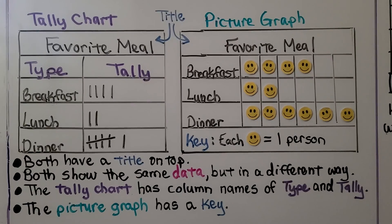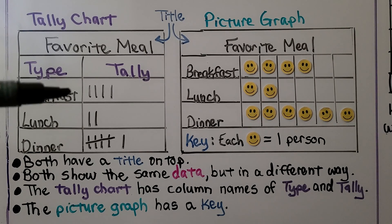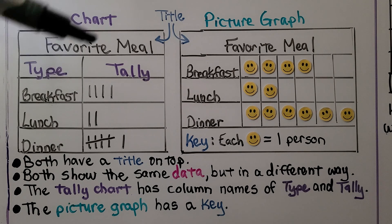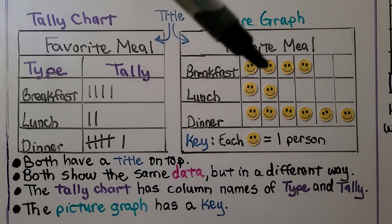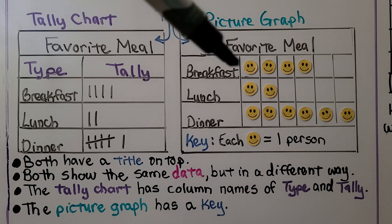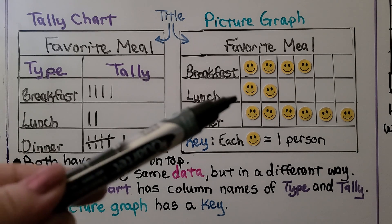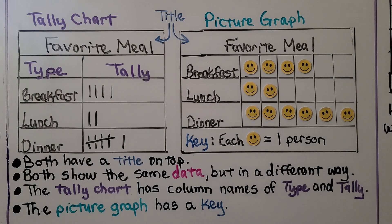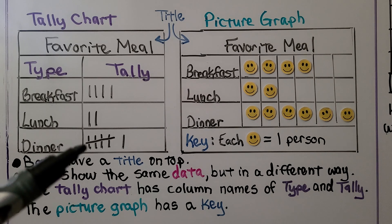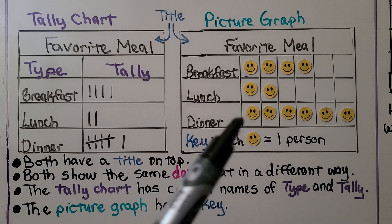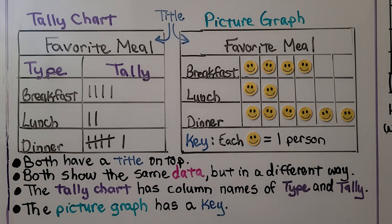The tally chart shows four liked breakfast, and the picture graph also shows four chose breakfast. The tally chart shows two chose lunch and the picture graph shows two chose lunch. The tally chart shows six for dinner and the picture graph shows six for dinner.